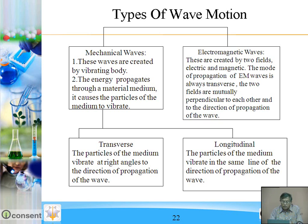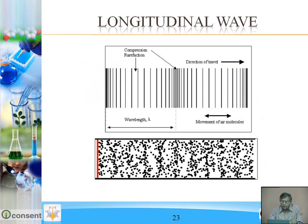In transverse waves, the particles of the medium vibrate at right angles to the direction of propagation of the wave. In longitudinal waves, the particles of the medium vibrate in the same line as the direction of propagation. Electromagnetic waves are created by two fields — electric and magnetic. The mode of propagation of electromagnetic waves is always transverse, with the two fields mutually perpendicular to each other and to the direction of propagation.